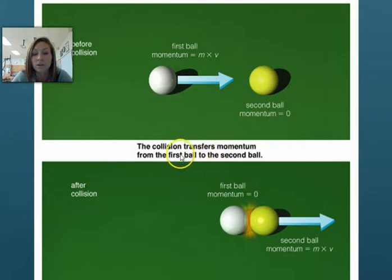The collision transfers momentum from the first ball to the second ball after the collision. So if this ball's momentum was zero, the second ball, then now the first ball is going zero or has no momentum, and the second ball is going at the speed that the first ball was, and therefore has the same momentum that that first ball did before they collided. And that is because this is a closed system. There are no other forces acting on the two billiard balls, except for the balls themselves.